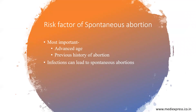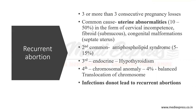The risk factors of spontaneous abortion: the most important factor is advanced age as well as previous history of abortion. Remember, infections can lead to spontaneous abortion. However, infections do not lead to recurrent abortion. So the type of abortion in which infection can lead to abortion is spontaneous abortion, and the type in which infections cannot lead to abortion is recurrent abortion.